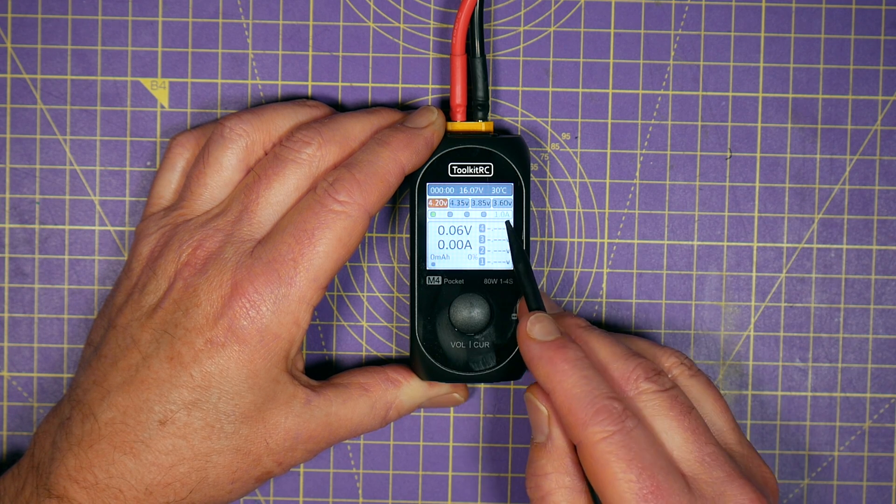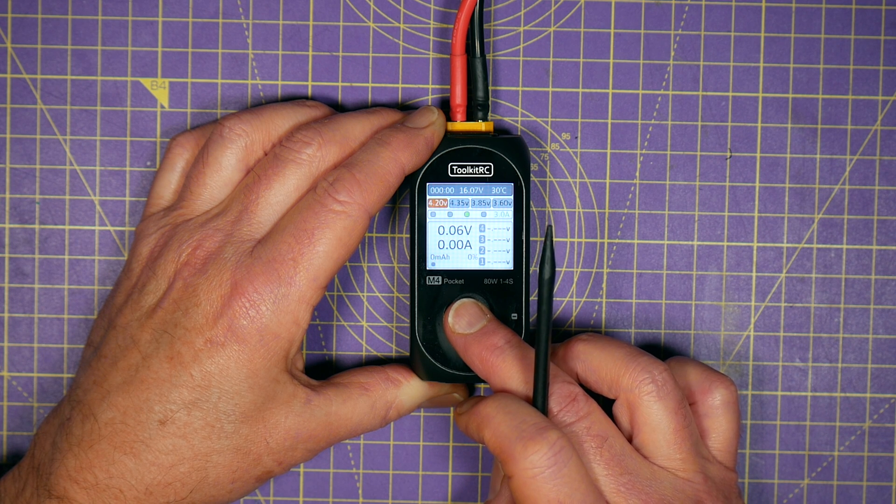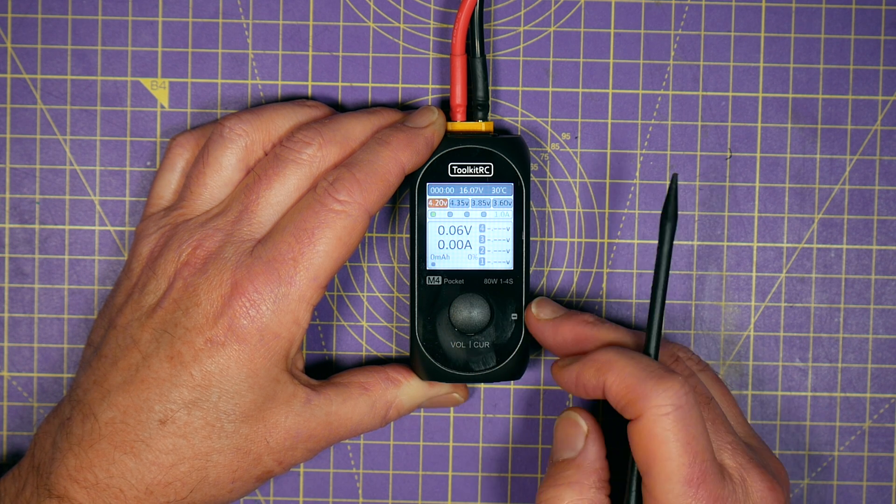So this is on one amp at the moment. And we cycle through 2 amps, 3 amps, 5 amps and back to 1 amp.